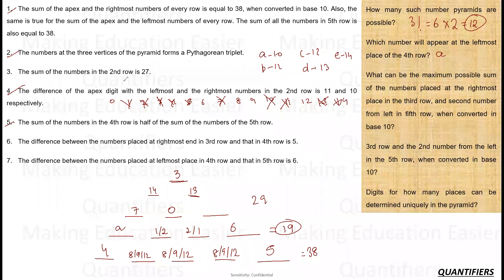Question 3: What is the maximum possible sum of the number at the rightmost place in the third row and the second number from the left in the fifth row? The rightmost third-row value is 11 (fixed), and the second-from-left in the fifth row can be at most 12. So the maximum sum is 11 + 12 = 23 in base 10.